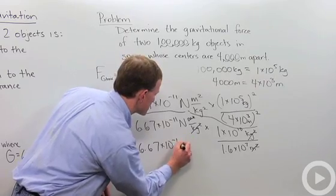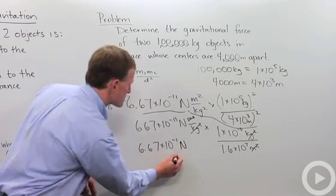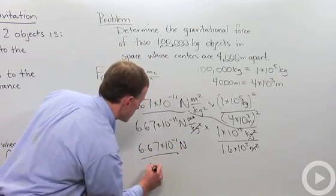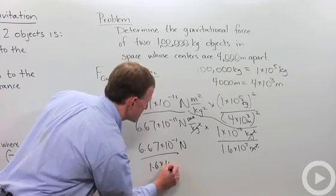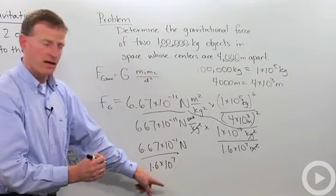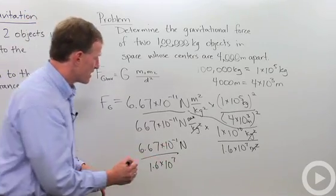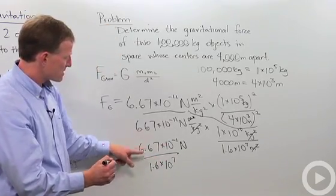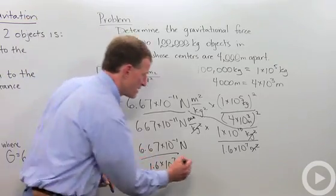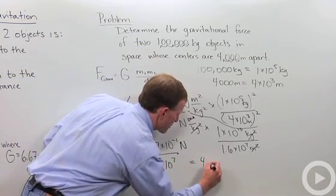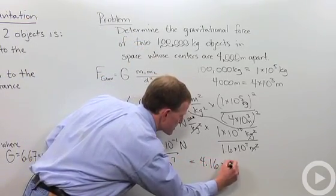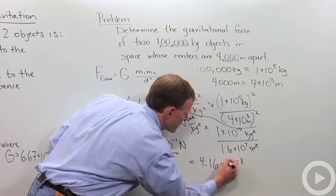Over, and that unit is going to just simply be newtons, over 1.6 times 10 to the 7th. And to move this up here, I just make this into a negative 7. And I get, dividing 6.67 by 1.6, I get 4.16 times 10 to the negative 8th.